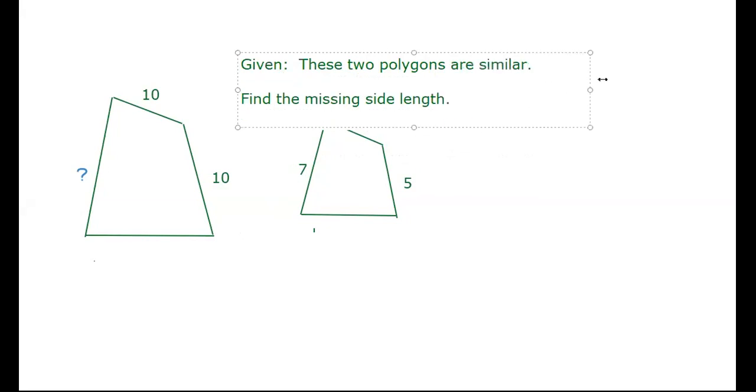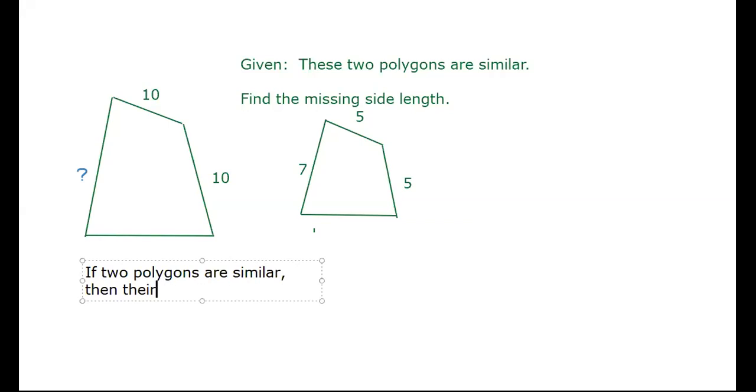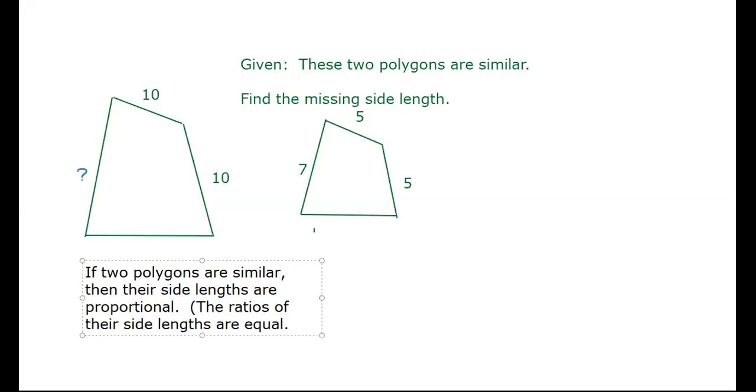Well, there's a conditional statement here. If two polygons are similar, then their side lengths are proportional. Another way you can say that is the ratios of their side lengths are equal. When you put little over big in your calculator, it simplifies to the same fraction. That's common terms. Little over big equals the same thing when we simplify it in our calculator.